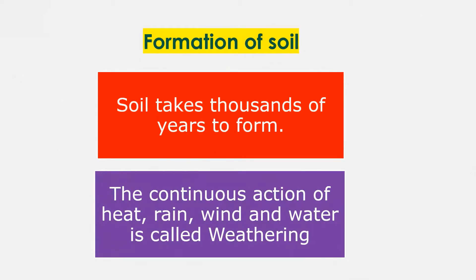Formation of soil. Soil takes thousands of years to form. Thousands of years ago, there was no soil — there were only big rocks. These big rocks broke into smaller pieces by the continuous action of heat, rain, wind and water. This continuous action is called weathering. The rocks then broke into smaller pieces by going far off places carried by wind and water, and by rubbing against each other. This process continued, and after thousands of years, soil has formed.